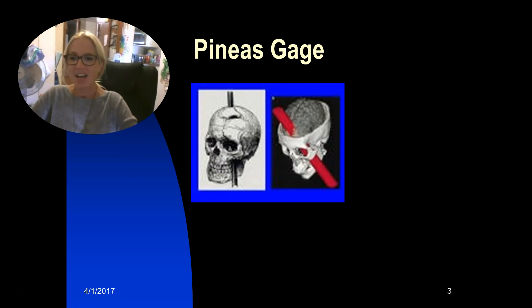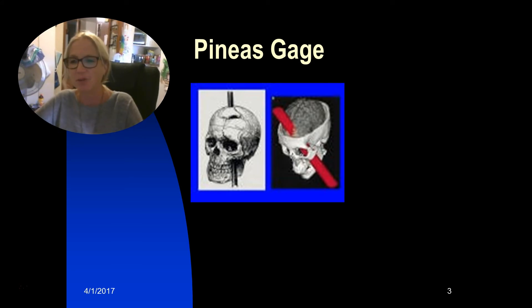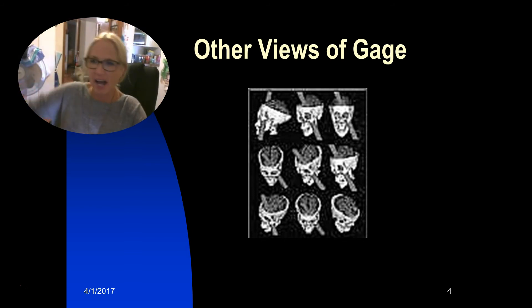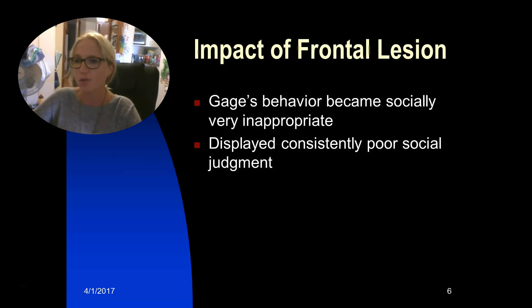Much of what we know about the frontal cortex came through a very unfortunate incident involving a foreman working on the railroad. He is well known in the medical and psychological literature because of his accident and what it told us about the brain — particularly the frontal lobe. Phineas Gage had a large rod propelled up through his face, through the orbital socket behind his eye, and out through the front of his skull.